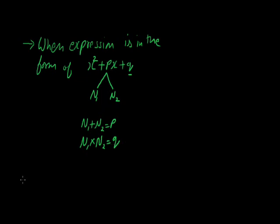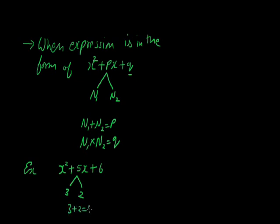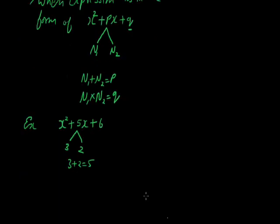Let's see how with an example. We have x squared plus 5x plus 6. This expression is in the form of x squared plus px plus q. According to our rule, we have to divide 5 into two numbers such that their sum is 5 and their product equals the constant term, that is 6. So their sum is 3 plus 2 equals 5, which is the coefficient of x.